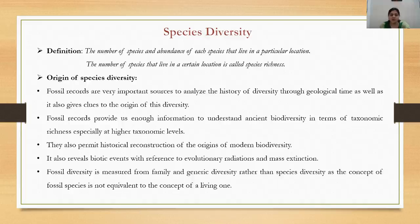Regarding the origin of species diversity, fossil records are very important sources to analyze the history of diversity through geological time and also give clues to the origin of this diversity. Whatever diversity we see today on planet Earth has evolved from certain organisms, and these relationships can be studied with the help of fossil records. Fossil records provide enough information to understand ancient biodiversity in terms of taxonomic richness, especially at higher taxonomic levels.